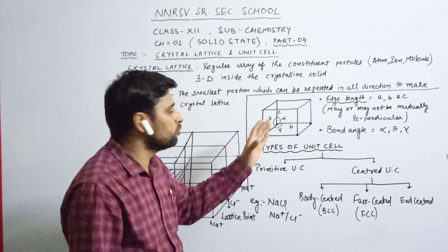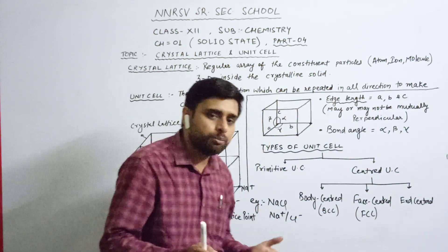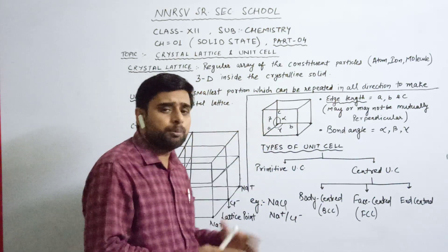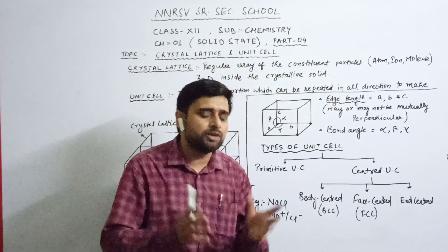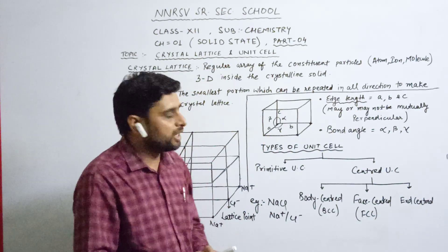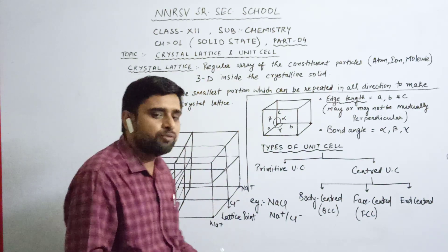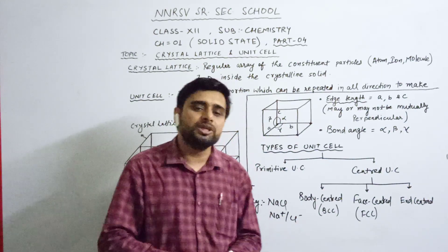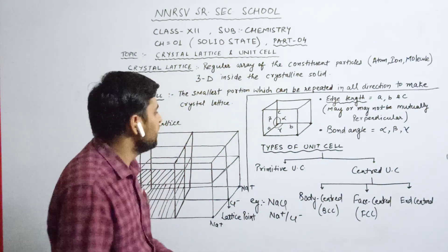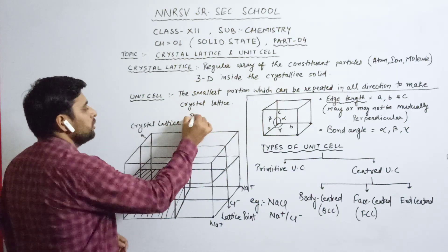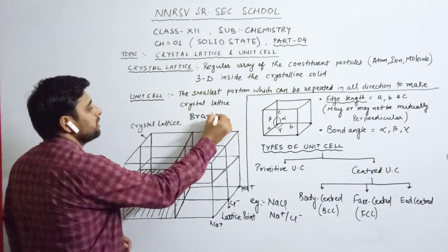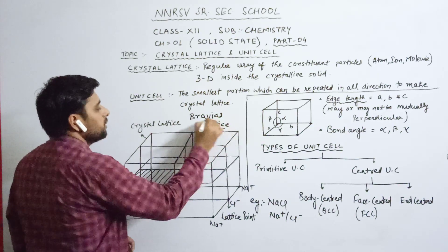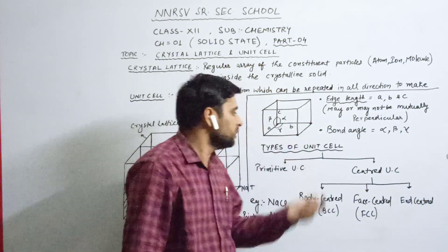The axes may or may not be mutually perpendicular. Because of this, unit cells have different crystal systems — seven types of crystal systems. In these seven crystal systems, 14 types of unit cells are present. This is known as Bravais lattice, in which 14 types of unit cells are present.